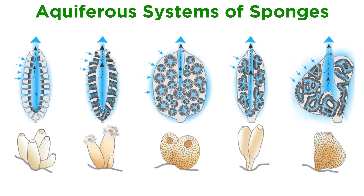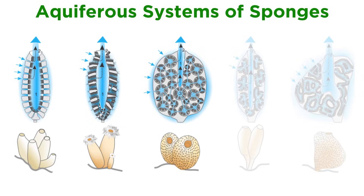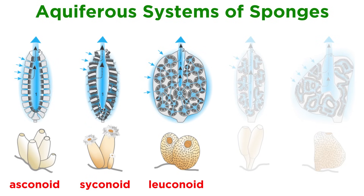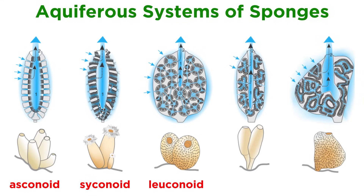Let's go over the most common body structures, also known as aquiferous systems of sponges. There are three main sponge structures: first, the simple tube or vase shape lined with choanocytes, known as asconoid; second, the syconoid, or pleated body wall, with inner pockets lined with choanocytes that connect to outer pockets; and third, the complex leuconoid pattern, with mesohyl containing a network of chambers lined with choanocytes connected by tubes — the most common body type. Less common structures are the syllebid, considered transitional between syconoid and leuconoid, and the solenoid, characterized by complex tubes lined with choanocytes. The tiny black things lining the inside of the sponge are choanocytes.